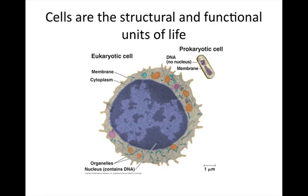Cells are the structural and functional units of life. Cells are the lowest level of structure that can perform all activities required for life. Two types of cells exist: prokaryotic cells and eukaryotic cells. Prokaryotic cells are much smaller, have no nucleus, and no organelles.